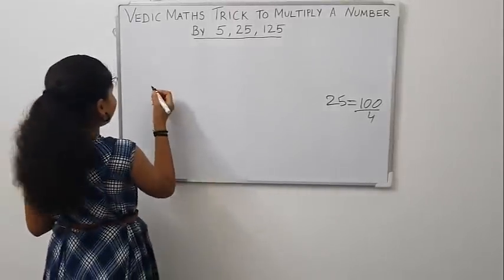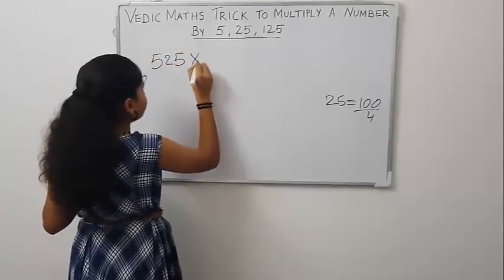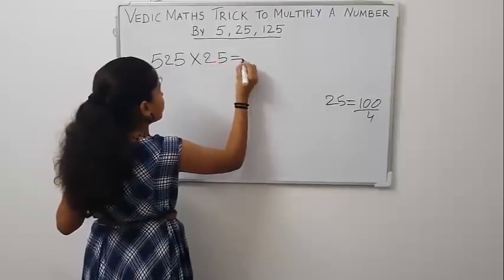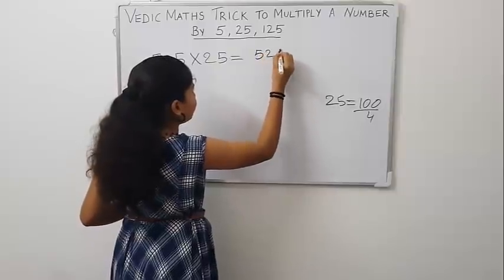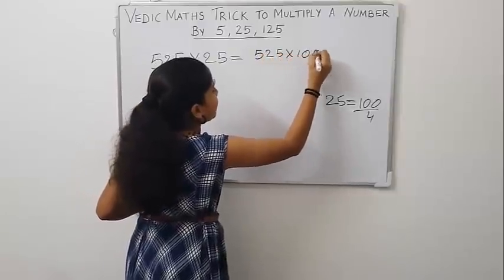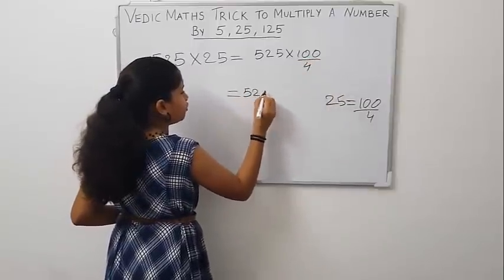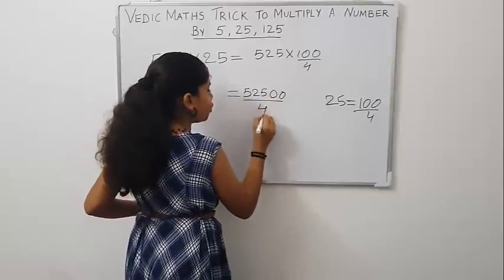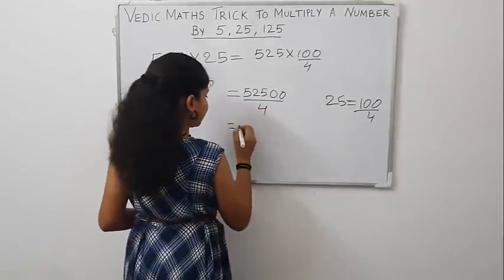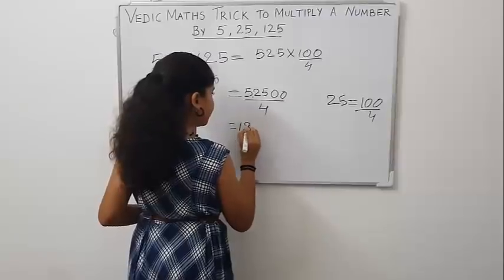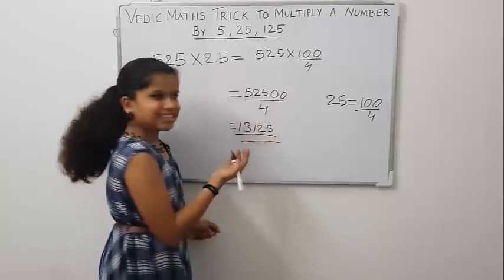Let us take 525 into 25. Now, write the question as 525 into 100 by 4, 52500 by 4. Now, divide 52500 by 4. That is 13125. This is our answer.